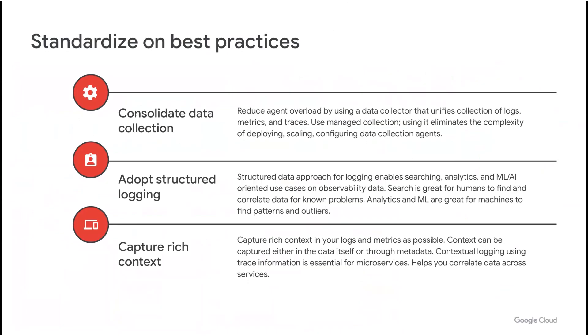In this section, I'm going to talk about some of the best practices related to using these ops products and touch on some of the newer capabilities we've recently announced. As we know, there are three pillars to observability data: metrics, logs, and traces. In many instances, customers deploy different collectors or agents for collecting these signals, which can be challenging from a collector administration and resource management point of view. Our first best practice recommendation is to deploy unified collectors that can collect metrics, logs, and traces. This is certainly possible with the OpenTelemetry Collector, as well as with the unified Cloud Ops Agent offered by Google.